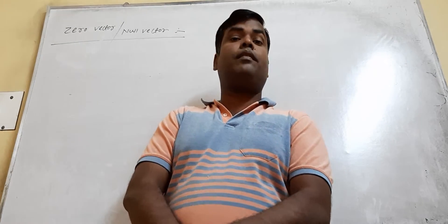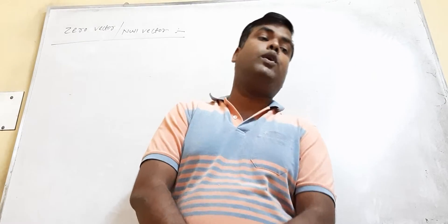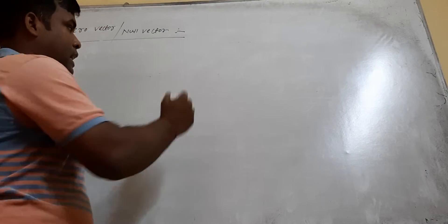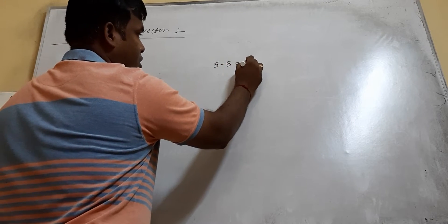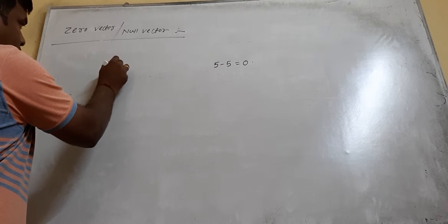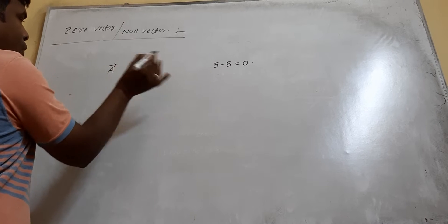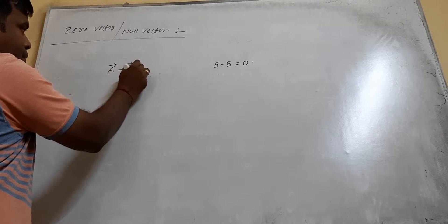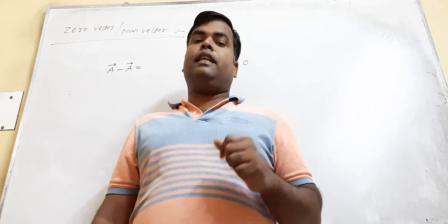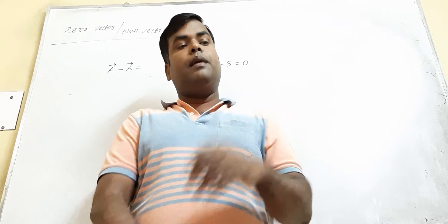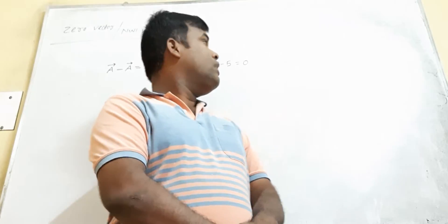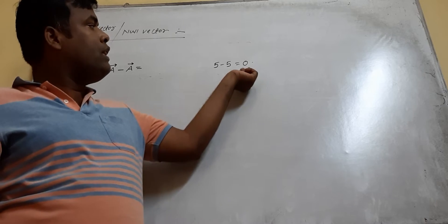What is the necessity of this zero vector? If you take two scalars, let it be 5, then 5 minus 5 equals zero. You take a vector A. What is A vector minus A vector? When you add two vectors, the result is another vector. If you subtract two vectors, the result is another vector. If you subtract 5 minus 5, the answer is zero, and zero is a scalar.